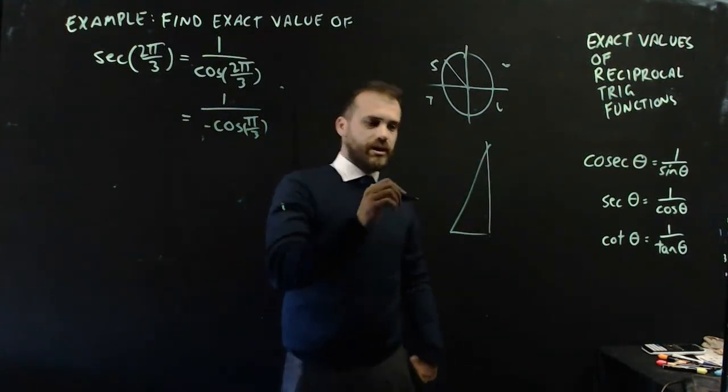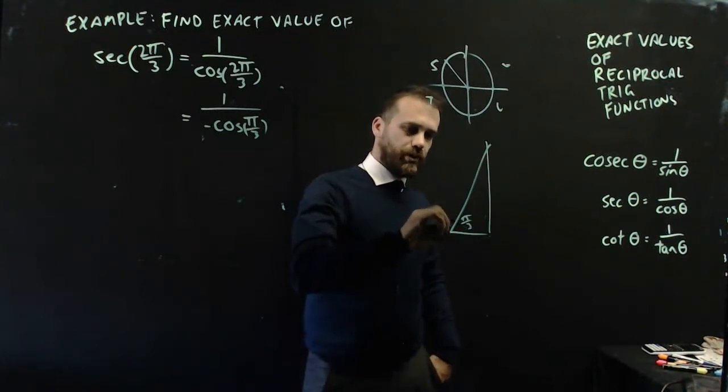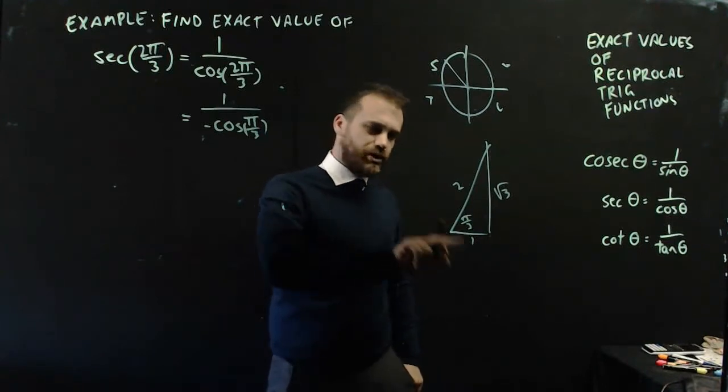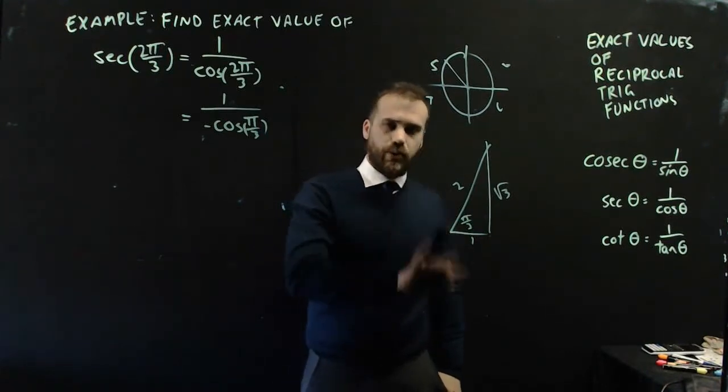Draw myself like a little standard triangle here. π/3, 1, 2, √3. Cos π/3, adjacent over hypotenuse, it's 1/2.